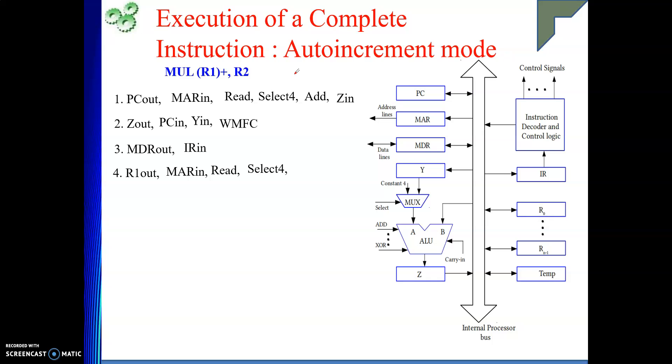What I will do? Select 4. I will increment. The way I have incremented PC. Here I will increment R1. Select 4. Here I have taken the length of my operand is 4 bytes. Machine is byte addressable. Due to that, select 4. Because R1 out means it is available on the B input. Select 4 means 4 will come here. Both the inputs are available. What operation will perform? Add. Then result will be given to Z register.